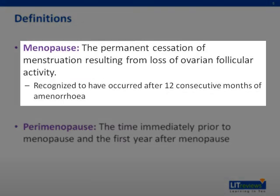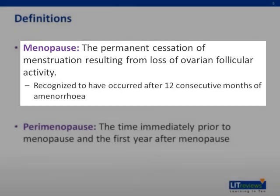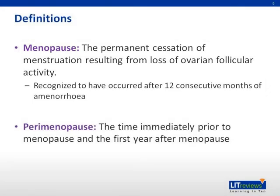Menopause is the permanent cessation of menstruation resulting from the loss of ovarian follicular activity. It is recognized to have occurred after 12 consecutive months of amenorrhea, and is also termed the final menstrual marker. There is no biological marker to diagnose menopause.